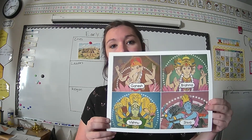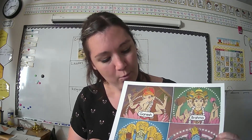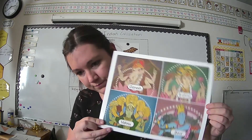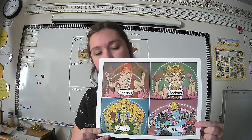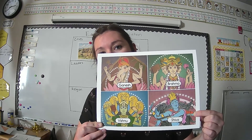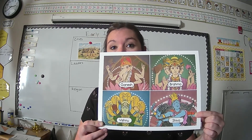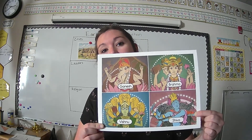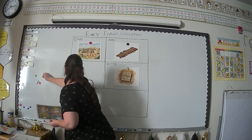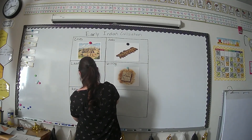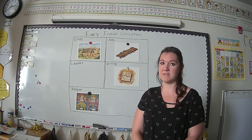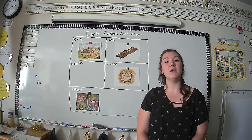Our four most important gods are shown in this picture — Ganesh, Brahma, Vishnu, and Shiva. These were the four most important gods in the Hindu religion. I'm going to put this under our religion column to remember how important religion is to ancient civilizations. We've got just a few blank spaces left on that chart, and we will fill them out in our next couple of lessons.